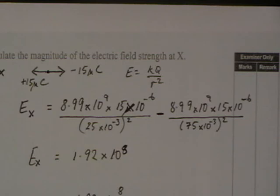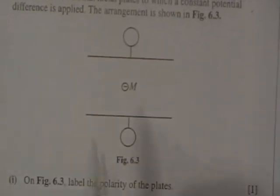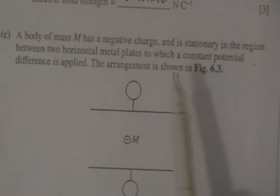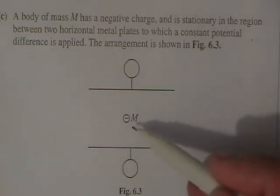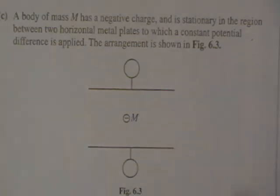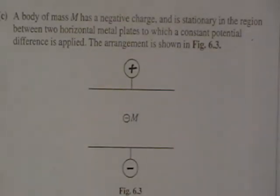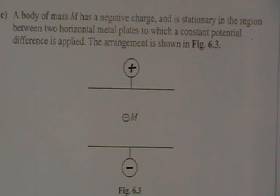We now move to a new part of the question. A body of mass M has a negative charge and is stationary in the region between two horizontal metal plates to which a constant potential difference is applied. Label the polarity of the plates. If this is a mass, that mass would naturally want to fall down. Therefore it must be being pushed back up by the electric field, which means we must have a minus here and a plus here. You must include both of those to get full marks because you wouldn't get the field working all the way across if you didn't have that.